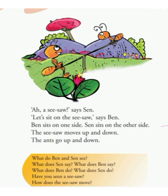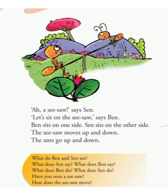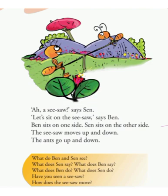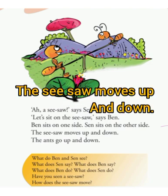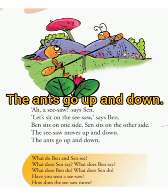Then, what does Ben do? Ben sits on one side. Then what does Sen do? Sen sits on the other side. How does the seesaw move? The seesaw moves up and down. How do the ants go? The ants go up and down.